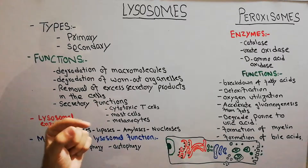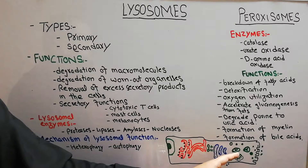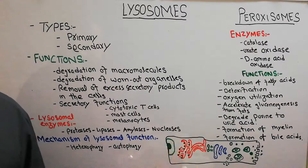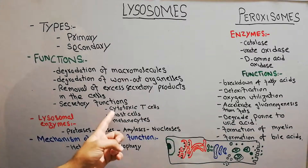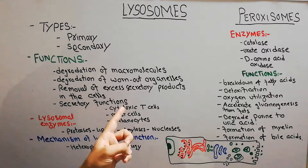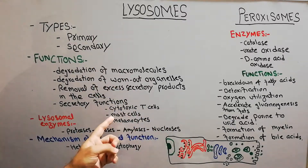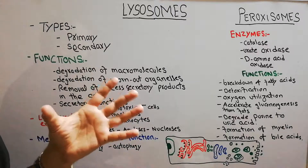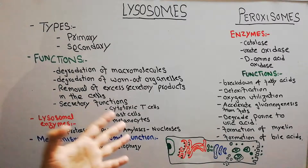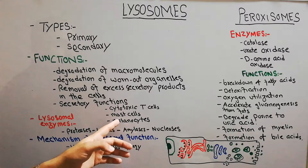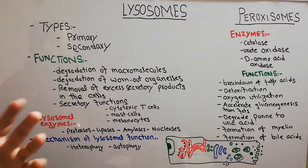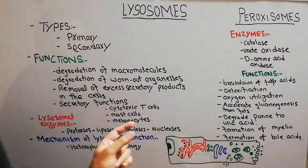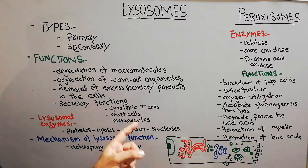Lysosomes also have secretory functions — they are not only involved in digesting macromolecules and organelles but also secrete their enzymes outside the cell. For example, cytotoxic T-cells secrete hydrolases to digest viruses. Mast cells, involved in allergy, also release secretions derived from lysosomes. Melanocytes are coloring cells in the skin, and their secretory product melanin is basically secreted by the lysosomes.